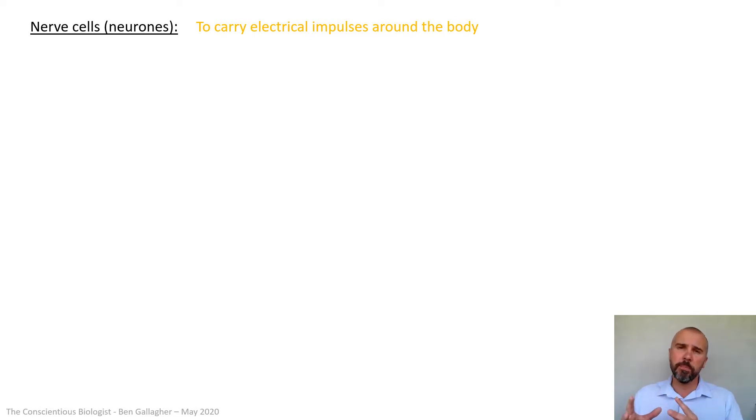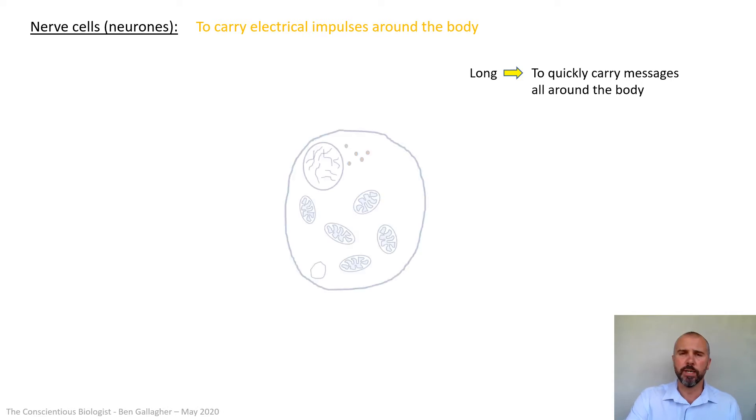These are like the wires, just like in an electrical device, the wires that carry the signals all around your body. So they need to be able to travel quite a long distance. For example, if I trod on something and it felt hot, that information needs to go up to my brain. So there must be a neuron that travels from my foot all the way up my body to my brain. That's a long distance. So the first key thing: neurons have to be long to quickly carry messages all around the body.